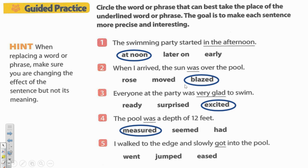And the last one: 'I walked to the edge and slowly got into the pool.' Should it be 'slowly went into the pool,' 'slowly jumped into the pool' — I don't think you can jump very slowly — or 'slowly eased into the pool'? I do like 'eased.' Very good. All right, third grade, you are off to try the independent practice on your own. Best of luck!